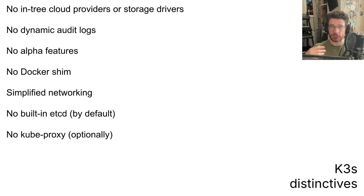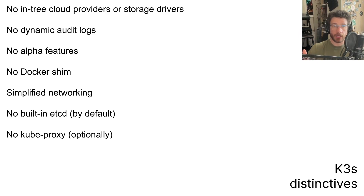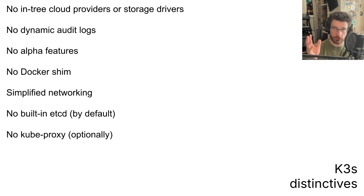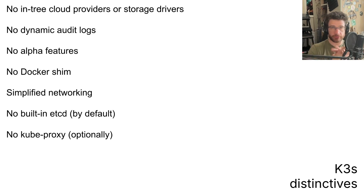There's no Docker shim — though there rarely is in modern Kubernetes. It's running containerd. Simple network based on Flannel, and no built-in etcd. Instead of etcd — the distributed value store — it just uses a very simple SQLite database.